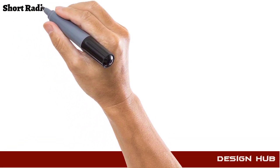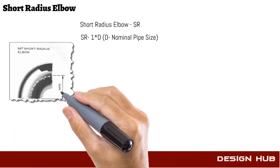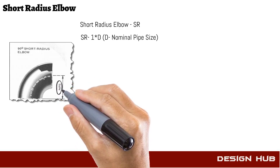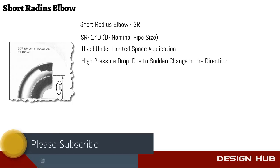Short radius elbow. Short radius dimension is 1D, where D is nominal pipe size. This type of elbow requires less space but has a larger pressure drop compared to long radius elbow.